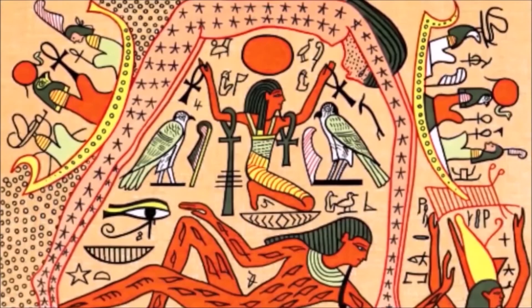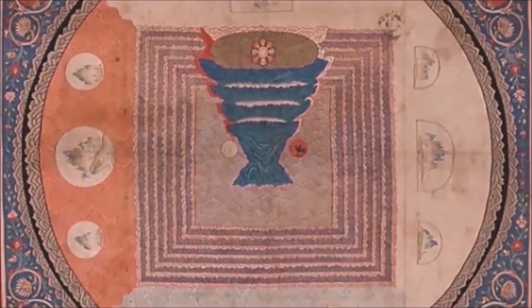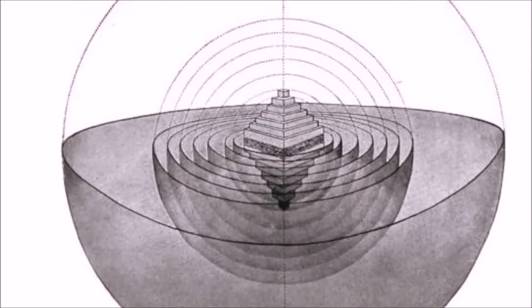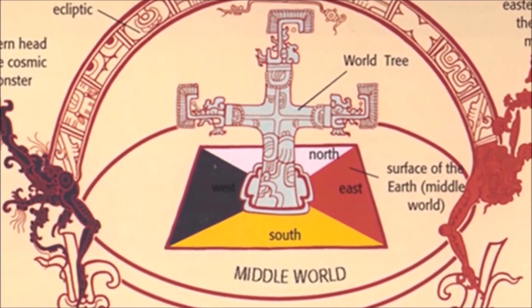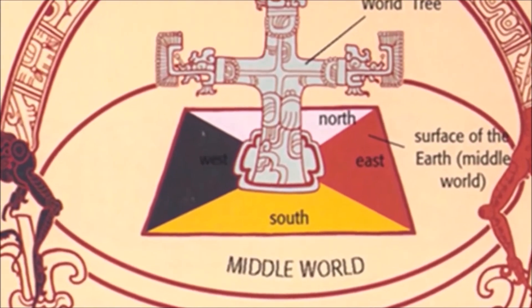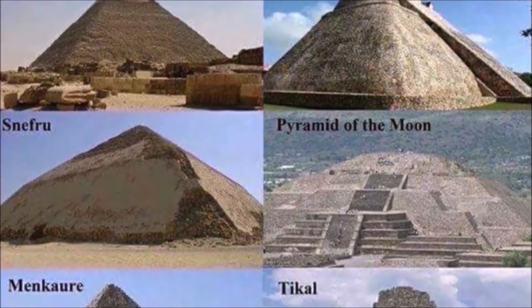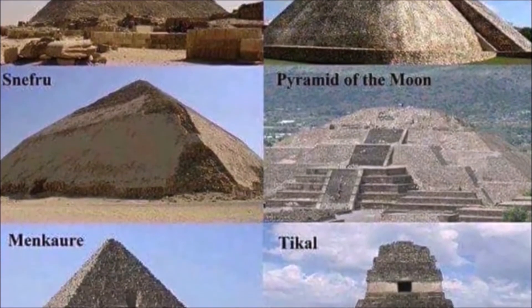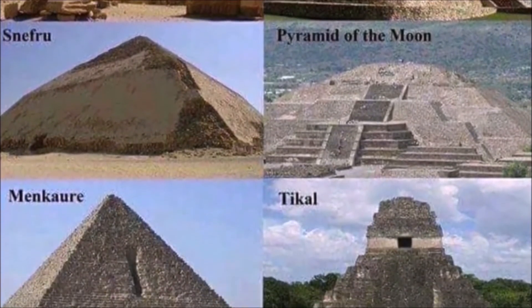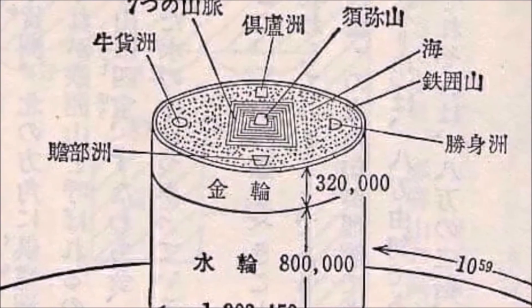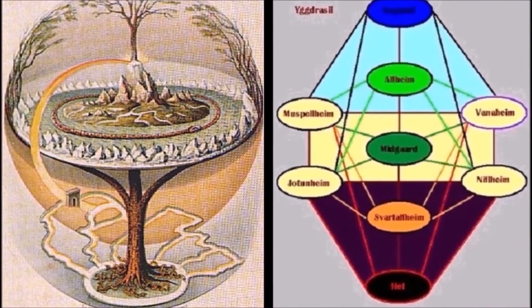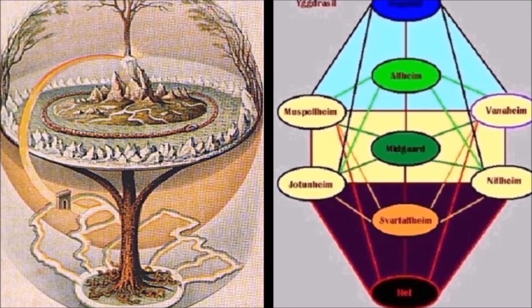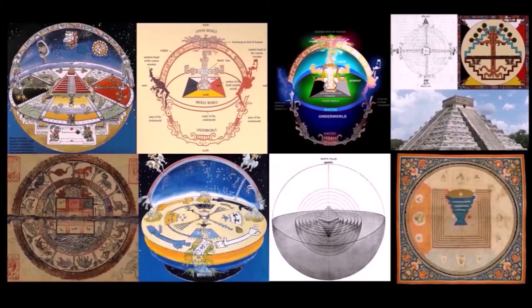It goes without saying that the ancients were clearly much smarter than we believe they were. Without the correct cosmology it is impossible to really understand what is happening in the world and your true purpose on this Earth. That is why it is so important to know the true cosmology, because it opens a catalog of truth about how this magnificent kingdom works and how human oppression can end.